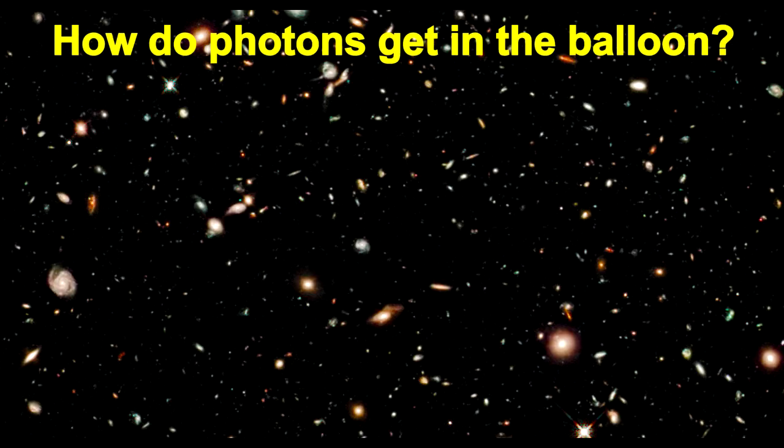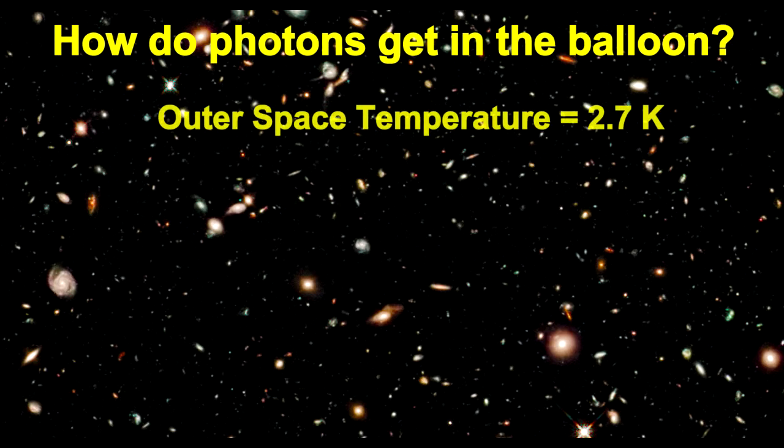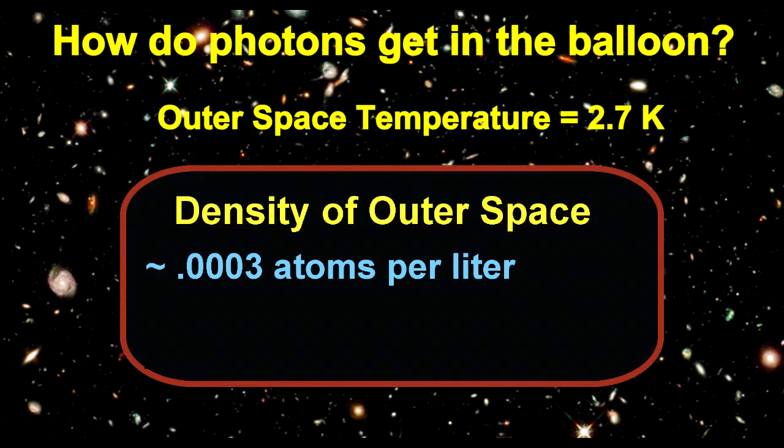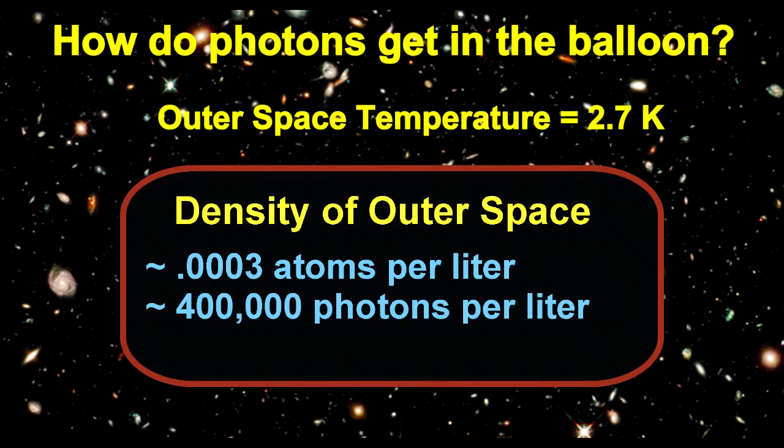This is interesting when you think of outer space which is cold but still has a temperature of about 2.7 degrees Kelvin. We think of outer space as empty. Estimates say it has much less than one atom per liter. Now we can calculate that it has about 400,000 photons per liter. Plus or minus infinity.